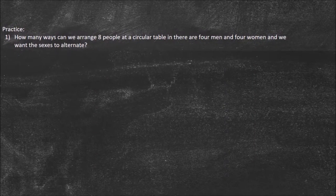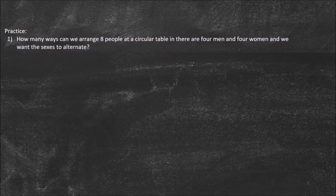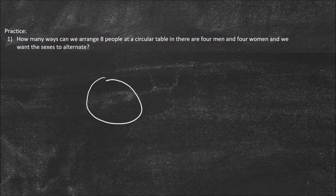First one: how many ways can we arrange eight people at a circular table if there are four men and four women and we want the sexes to alternate? So this is a tough one. We did touch on this example in the last one when we thought about how many different ways we can organize eight people at a table, but now there's a new constraint because there are four men and four women and they always need to alternate.